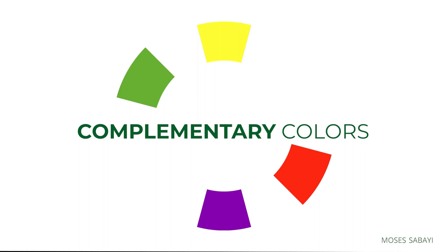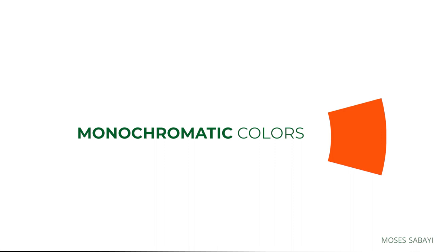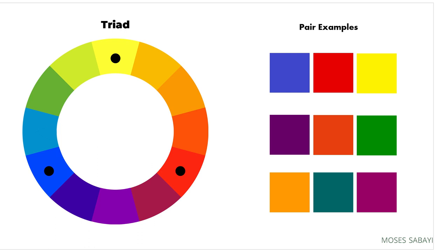There are other parts of the color wheel, like complementary colors, which are opposite to each other — for example, red and green. There are also analogous colors, which are groups of three to five colors adjacent to each other on the color wheel. There is monochrome — just one segment of the color wheel — for example, using only red, green, and blue in your artwork.